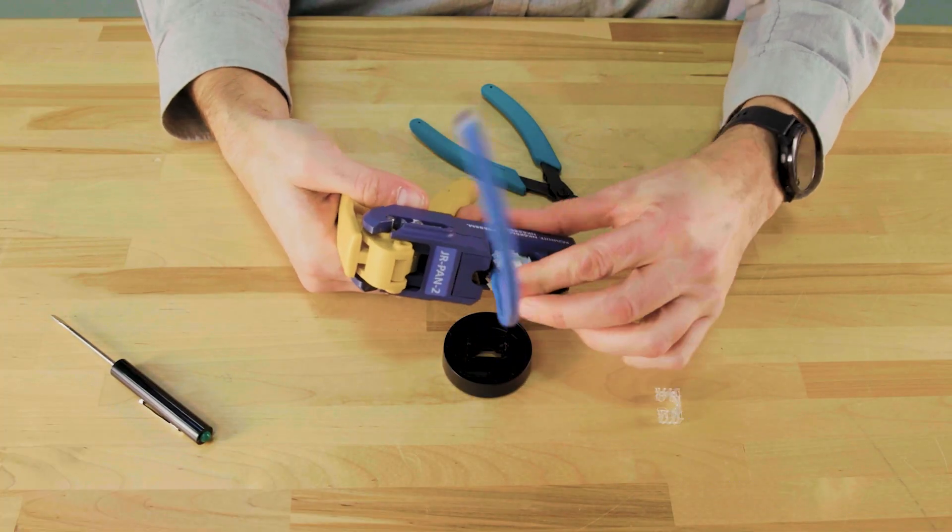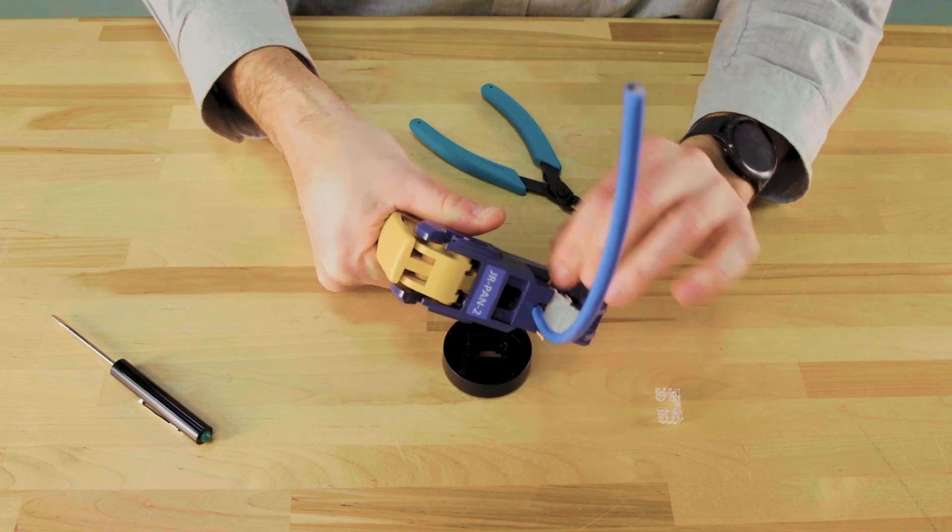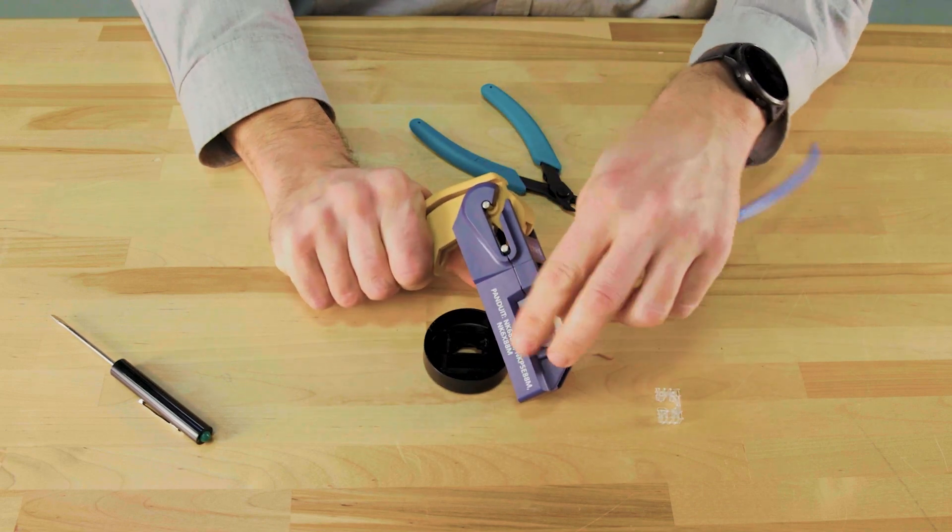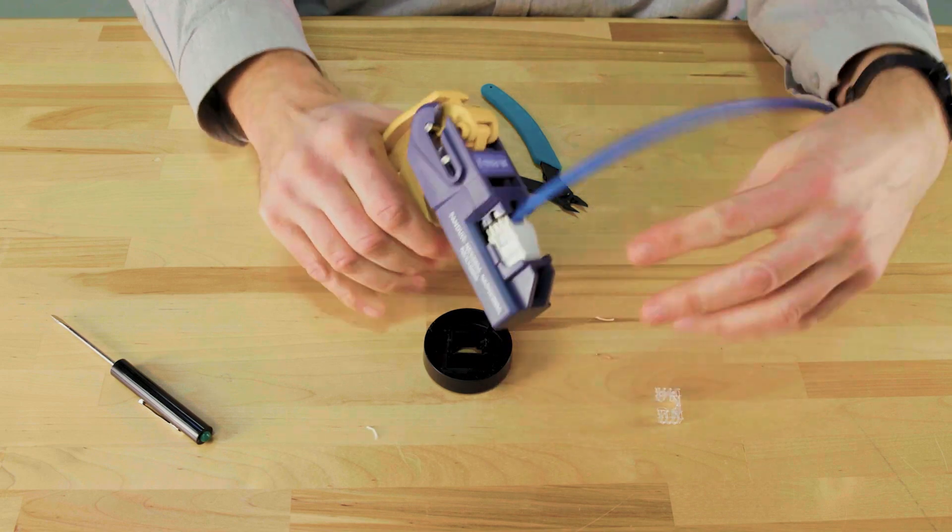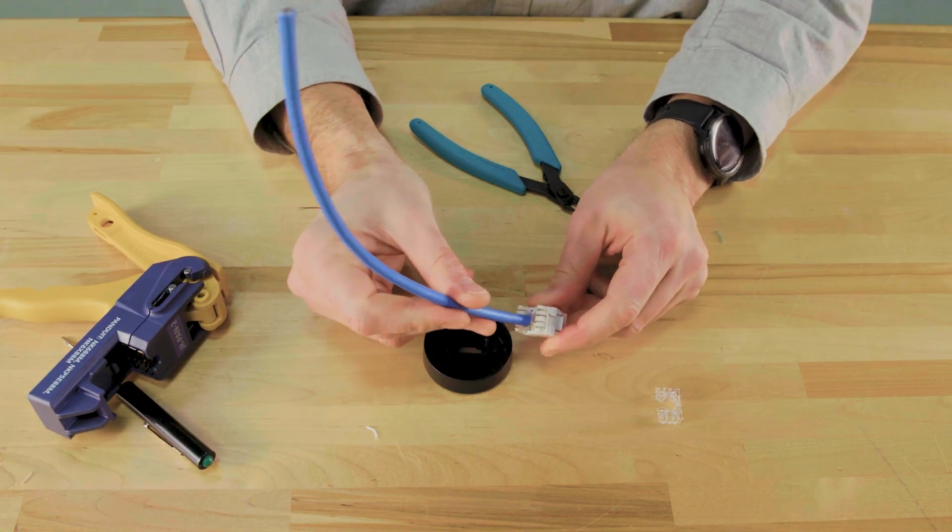Insert the jack into the jack rapid tool and pull the trigger. This will cut all the wires as it terminates. You should be able to remove the excess cable. Remove the jack from the tool and straighten the cable.